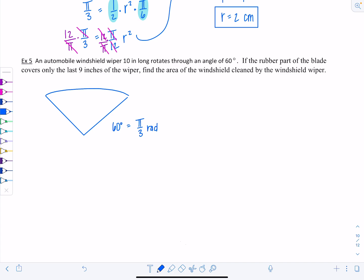It says the rubber part of the blade only covers the last 9 inches of the wiper. This whole thing is 10 inches, the windshield wiper, but the rubber part only covers the last 9 inches. Starting from here to the end is the part where the rubber blade is, and that's what's sweeping back and forth and cleaning. This gets cleaned. This bottom part down here does not get cleaned. This part up here is cleaned. It's asking for the area of the windshield cleaned by the windshield wiper. We're going to compute the total area and then subtract the area that's not cleaned.